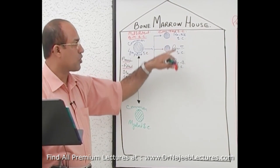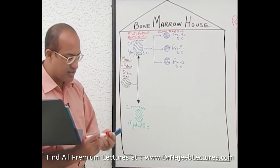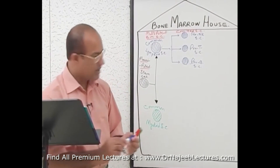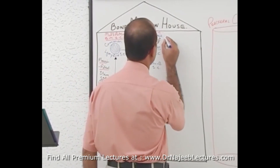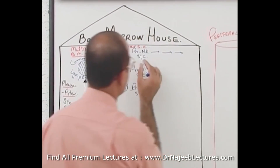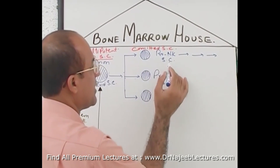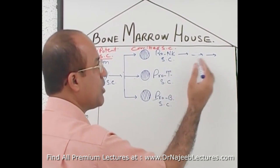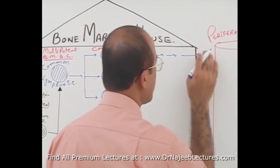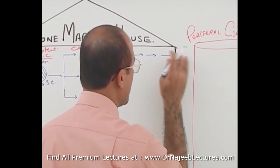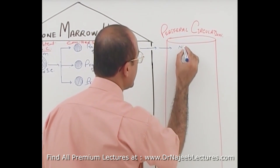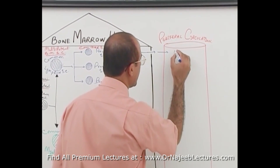These committed stem cells are pro-natural killer cells. These committed cells will multiply, differentiate, and eventually appear in peripheral circulation, where they are called natural killer cells.